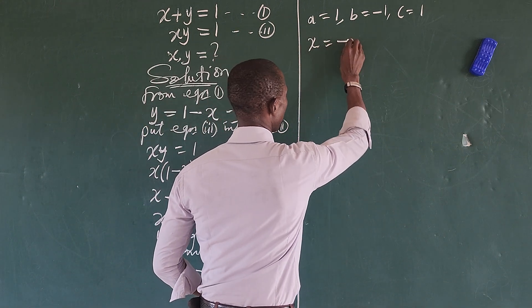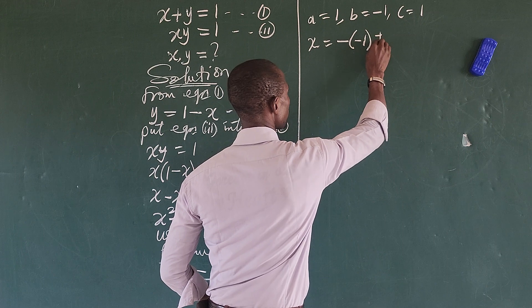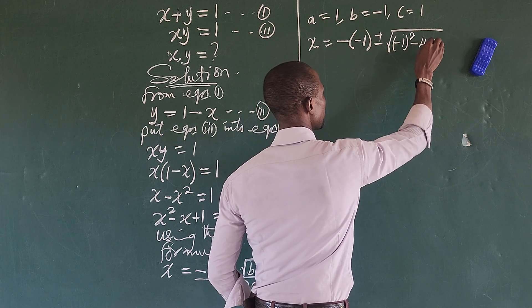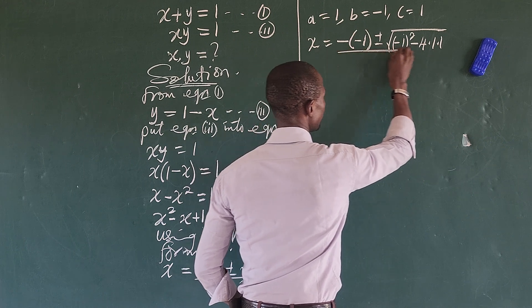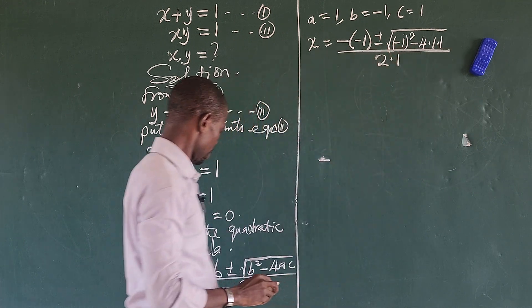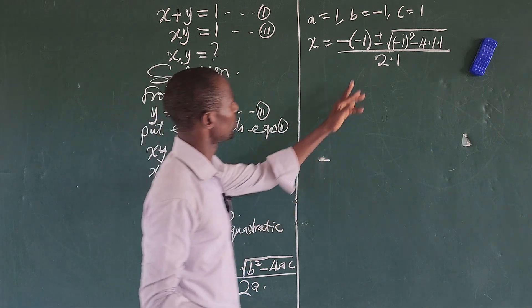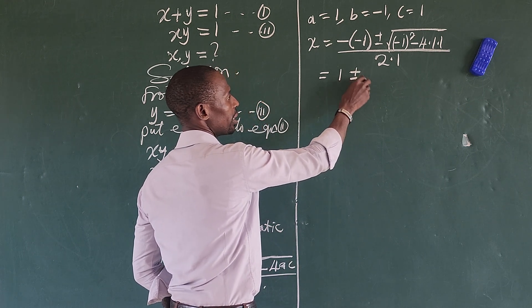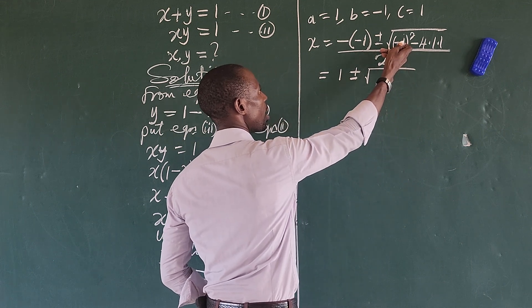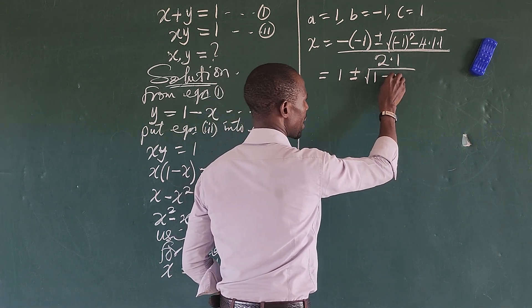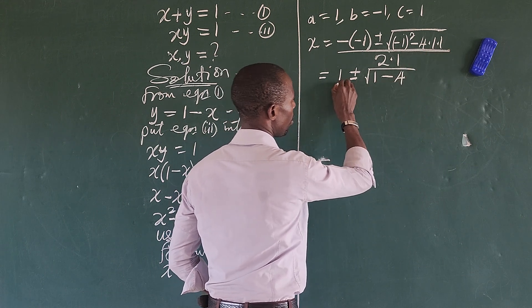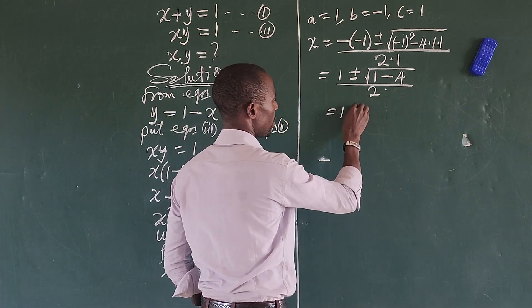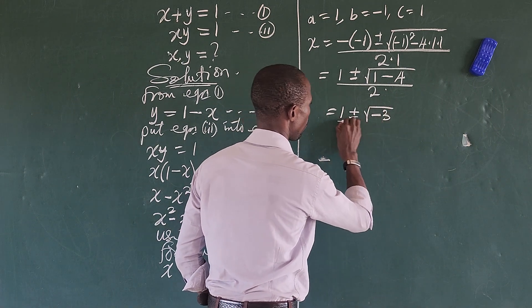Substituting into the formula gives us: minus bracket minus 1 close bracket, plus or minus the square root of minus 1 squared minus 4 times 1 times 1, all over 2 times 1. Simplifying: minus times minus gives us 1, minus 1 squared gives 1, and 4 times 1 times 1 gives 4. So we get 1 minus 4 inside the square root, giving us 1 plus or minus the square root of minus 3, all over 2.